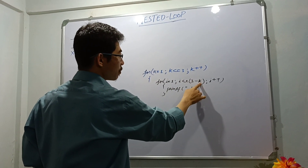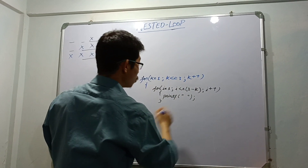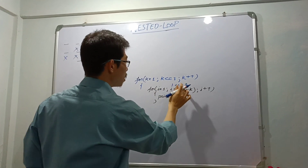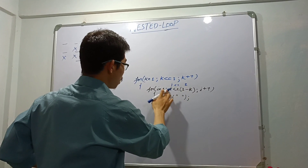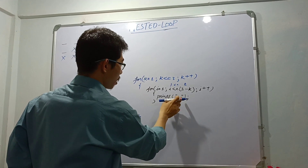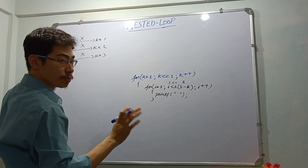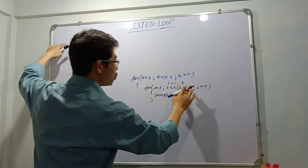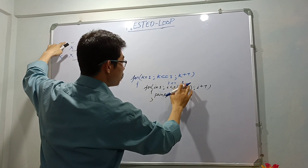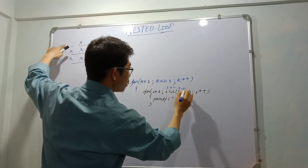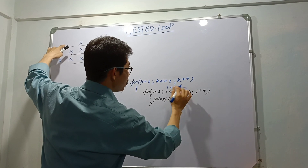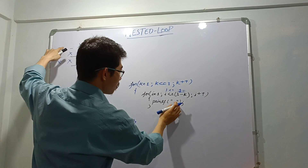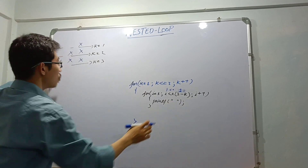When k value is 1, 3 minus 1 is 2, i is 1, 1 is less than equals to 2, so it will run two times and print two spaces. When k value will be 2, 3 minus 2 is 1, 1 is less than equals to 1, it means it will print only one space.